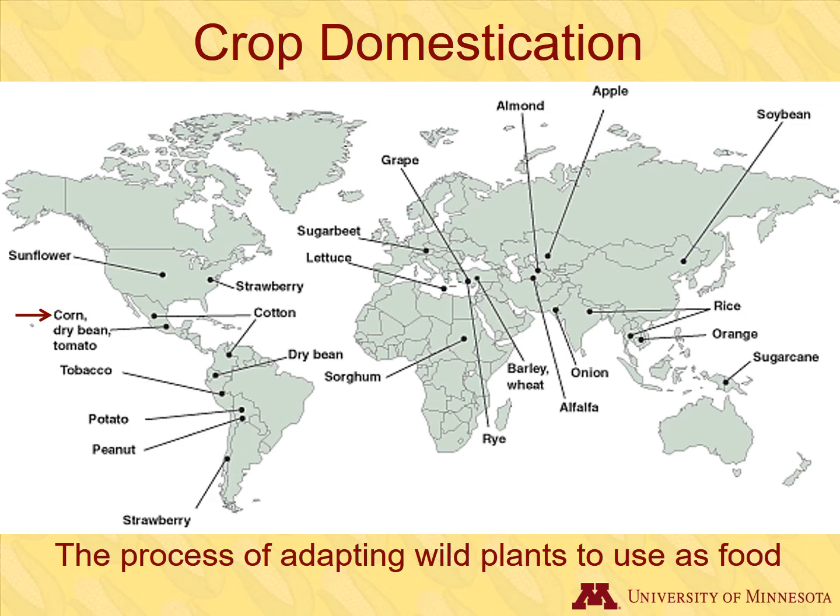This map shows different crops and the regions in which they were domesticated. Can you see where corn was domesticated?